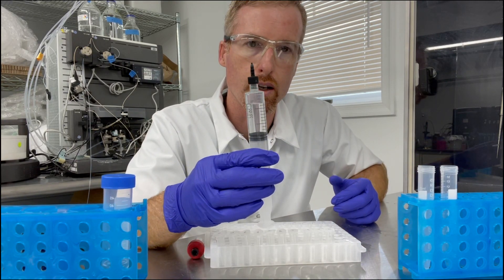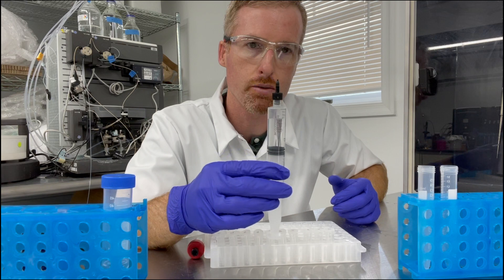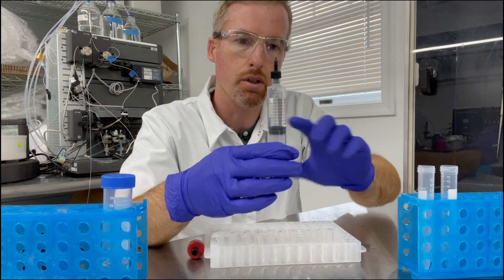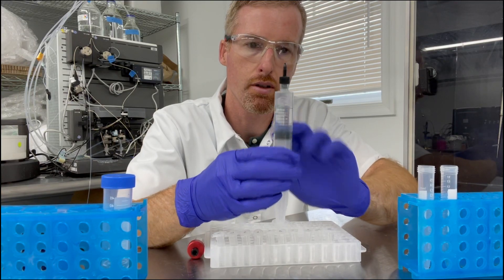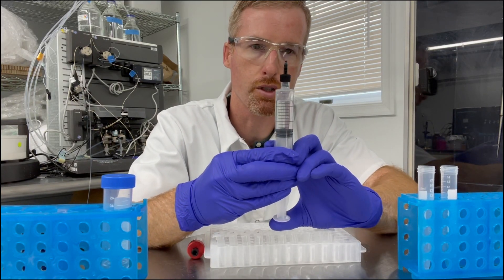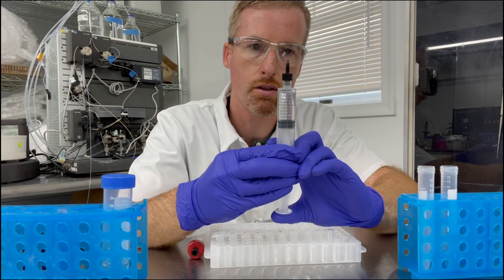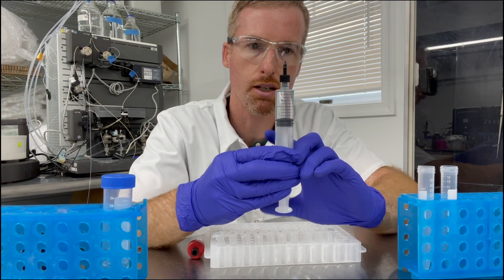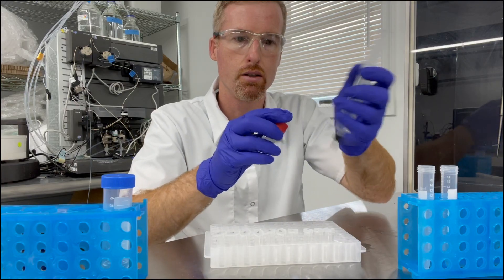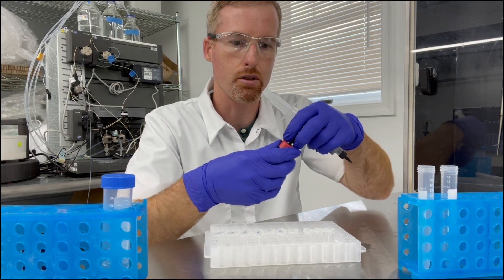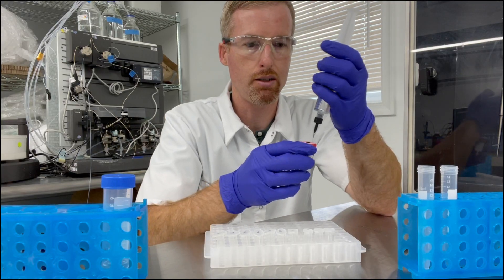Now you can see that I pulled up some air with my protein so I'm going to go ahead and turn the syringe upside down, tap it, and then force the air out until I see a little bit of liquid at the top. Okay, and then I'm going to go ahead and start flowing the protein into my column.